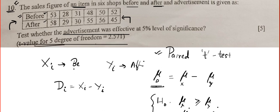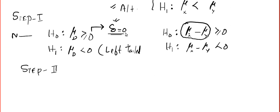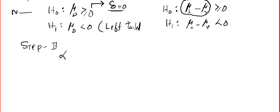It is a left-tailed test. Alpha is given as 5%. There is a small mistake in the question — they have given the t-value for a two-tailed test, but this is not a two-tailed test because 'advertisement was effective' implies a directional test. No need to take alpha by 2 since we are not doing a two-tailed test.